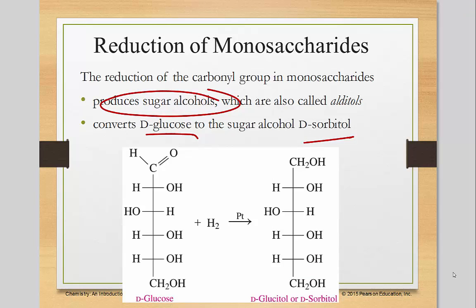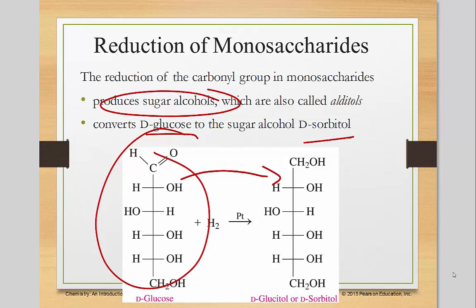So here's glucose. It's been reduced. How do we know it's been reduced? By the fact that it's missing a bond to that oxygen — one of those bonds got broken and is now an OH group.